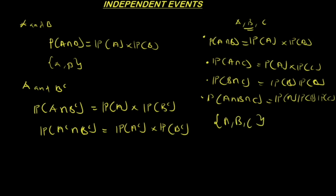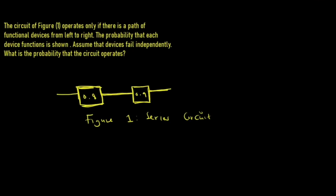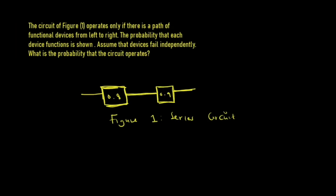Let's take an example. The circuit operates only if there is a path from left to right. The probability that each device functions is shown. Assume that the devices fail independently. What is the probability that the circuit operates? Let L and R denote the events that the left and right devices operate, respectively.